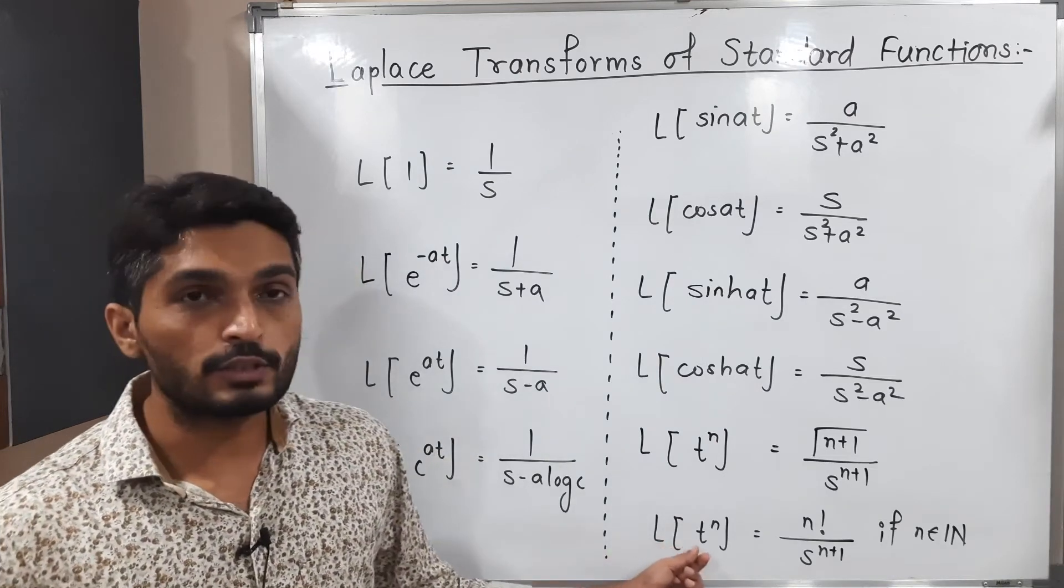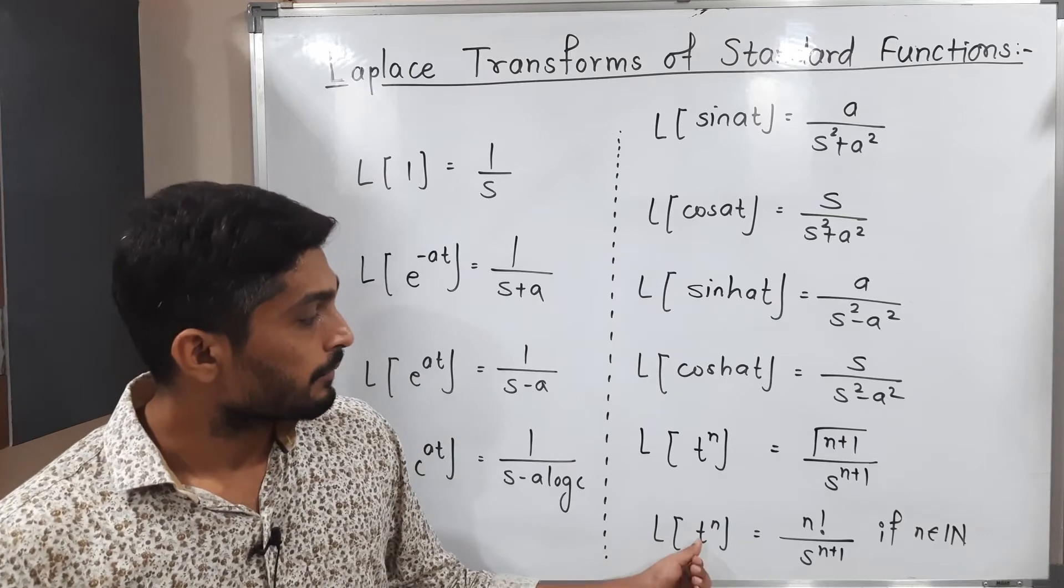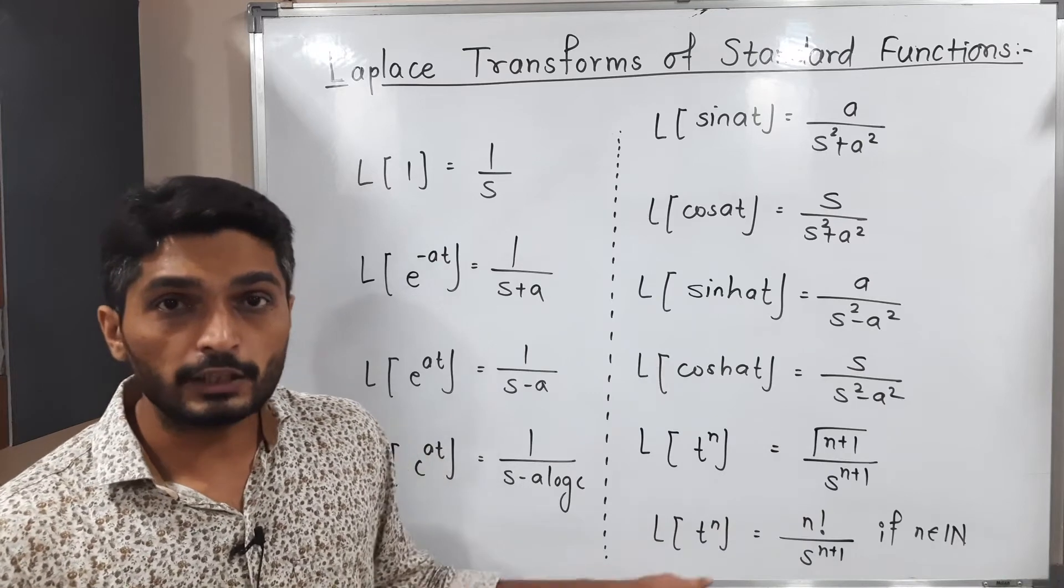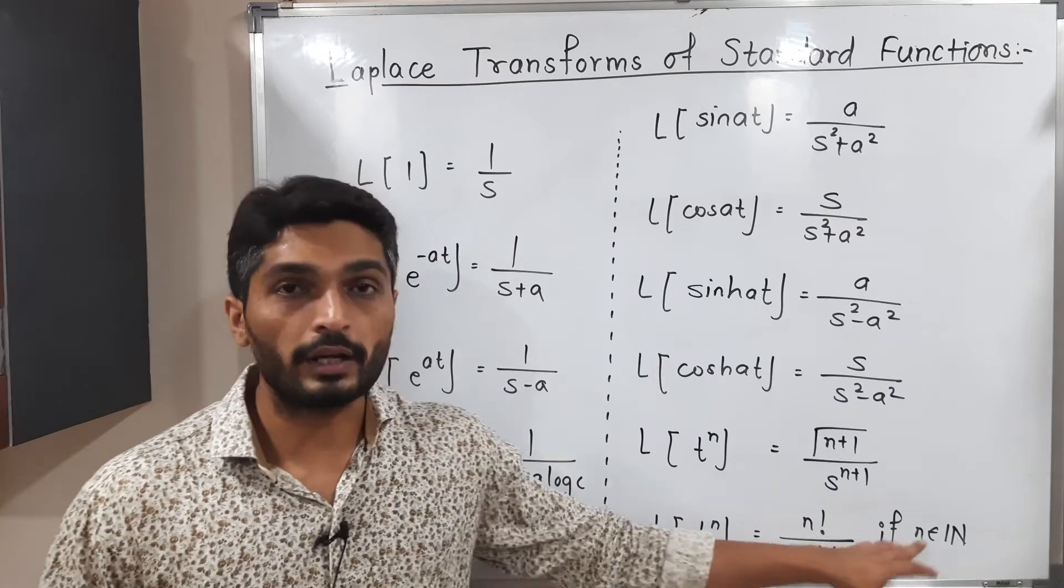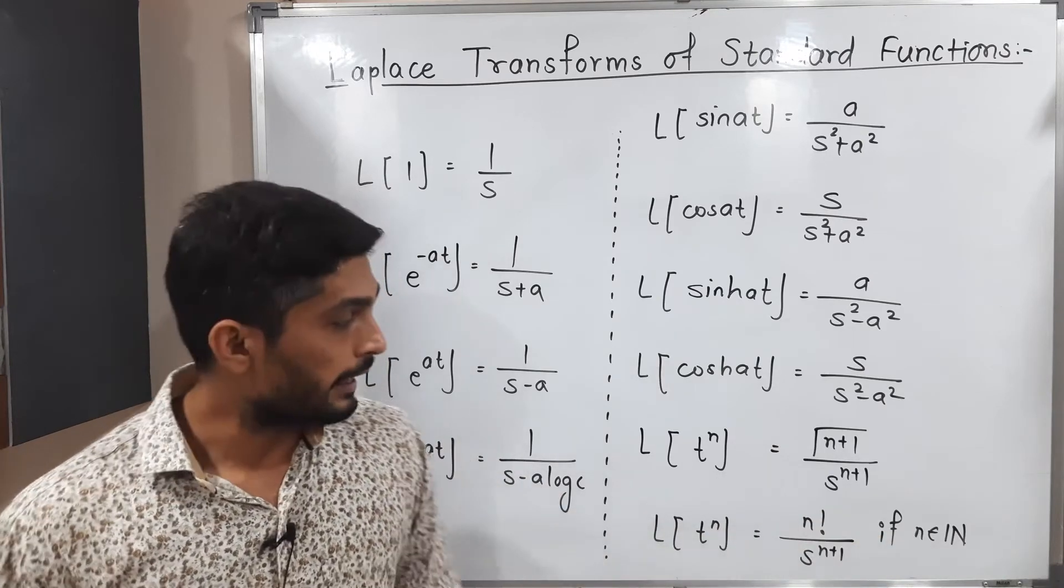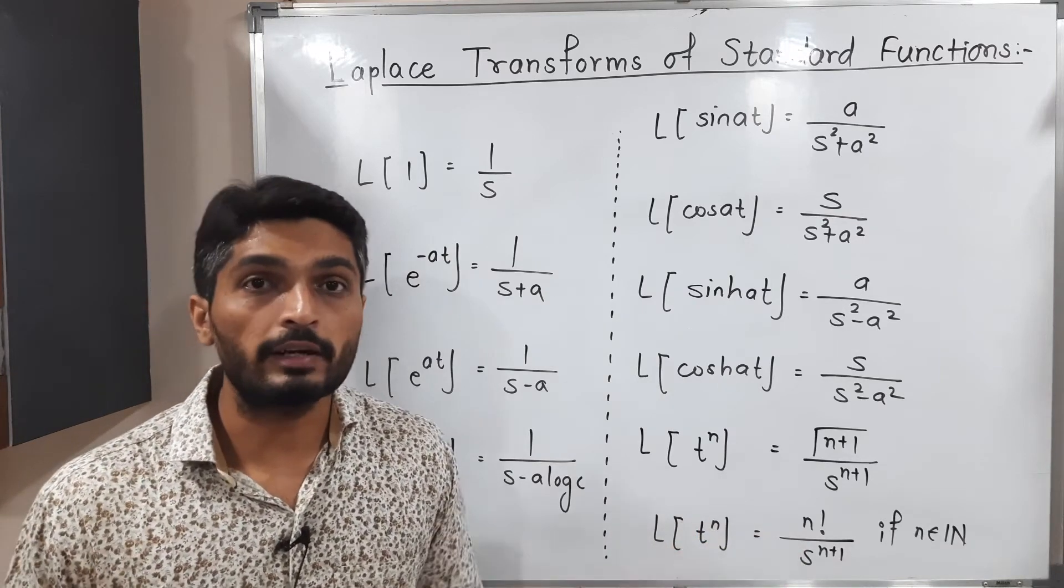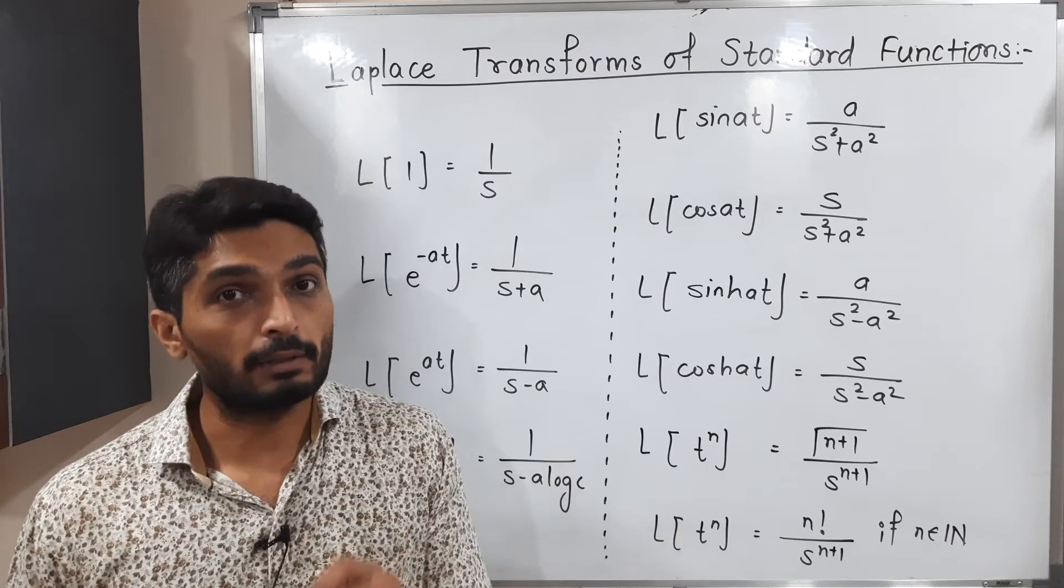Next, Laplace of t^n, maybe you will get a surprise that I have written the same left hand side just right hand side formulas are different. See the last formula is applicable only for n is a natural number that means t^4, t^5 like that.